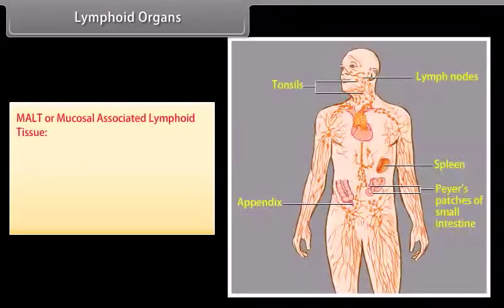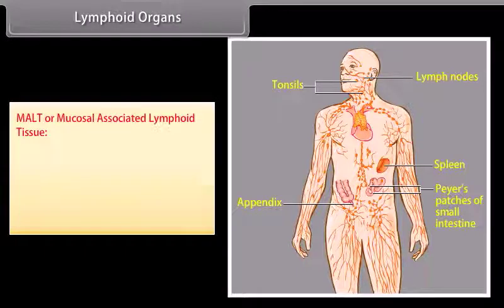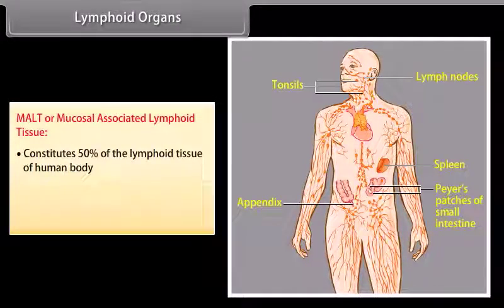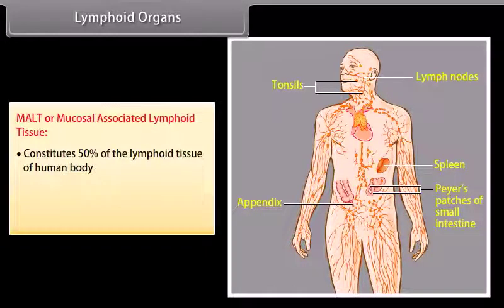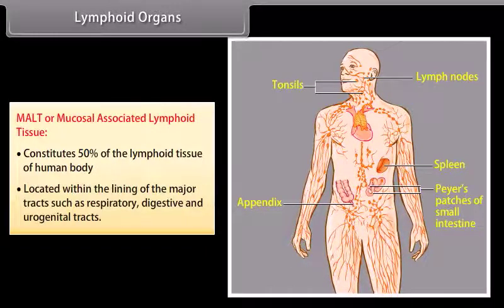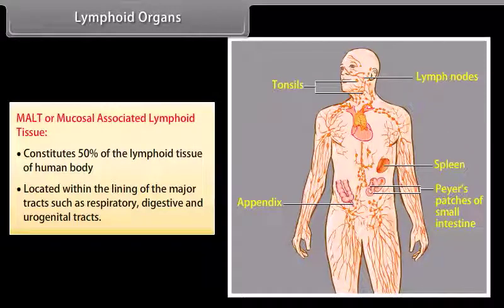MALT, or mucosal-associated lymphoid tissue, constitutes 50% of the lymphoid tissue of the human body. It is located within the lining of the major tracts such as the respiratory, digestive, and urogenital tracts.